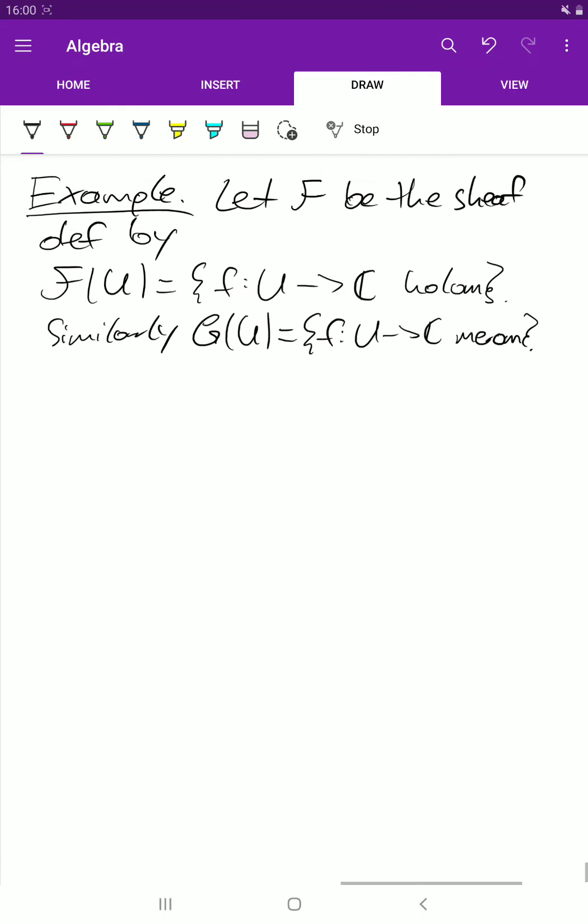Again, you can easily check that this is a sheaf. So we now look at the stalk of F at 0, which is just F_x for x equals 0.